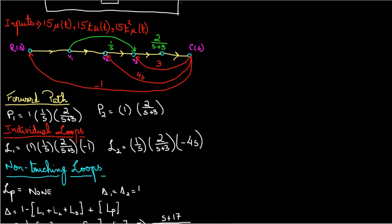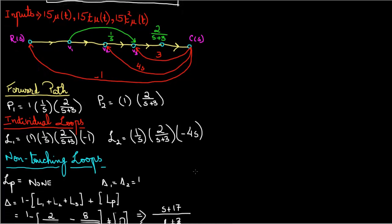Once you do that then you would have to know your non-touching loops. As you can see in this flow chart all of your loops are touching the forward path so that means we're not going to have a non-touching loop because all of them are touching the forward path. So our delta 1 delta 2 is going to be equal to 1.